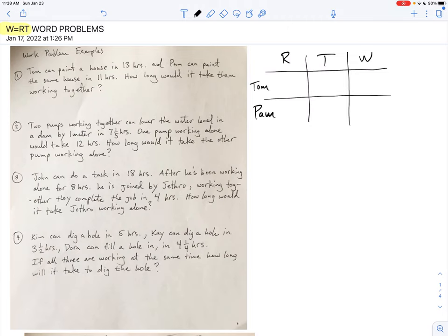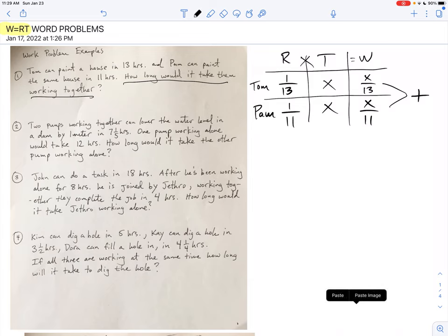So let's begin. Tom can paint a house in 13 hours. Well, guess what? If he works for one hour, he's going to get one thirteenth of that house painted. Use the same type of logic. If Pam can paint that house in 11 hours, she's going to get one eleventh of that job done if she works alone. Now, it says here, how long would it take them working together? I have no idea how long it will take them working together. I don't know. But I do know this. Rate times time equals how much work is done. So I go one thirteenth times X, one eleventh times X and I know that these two people are working together.